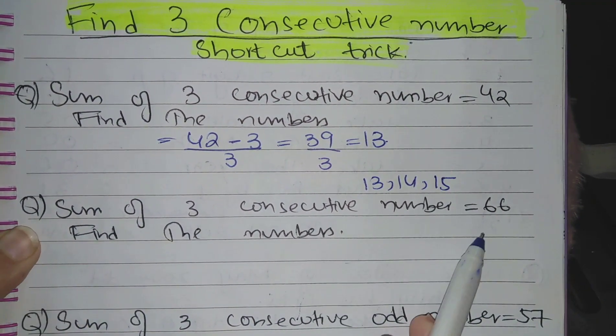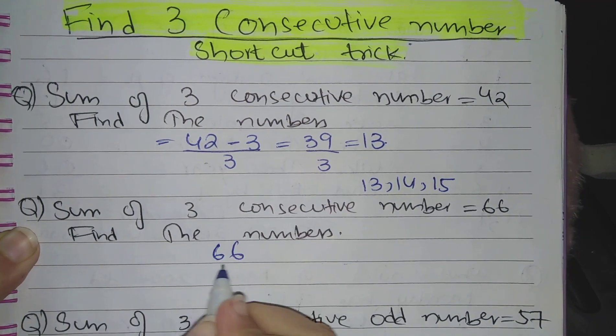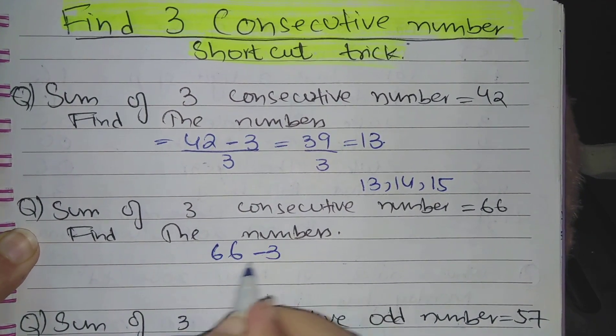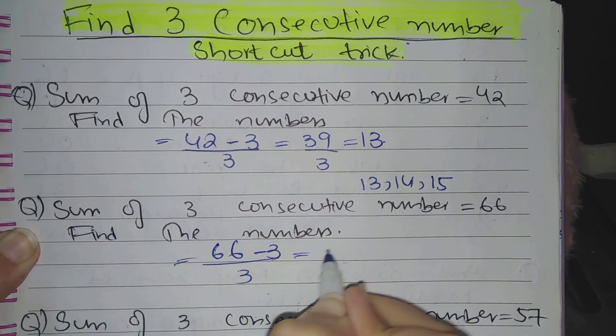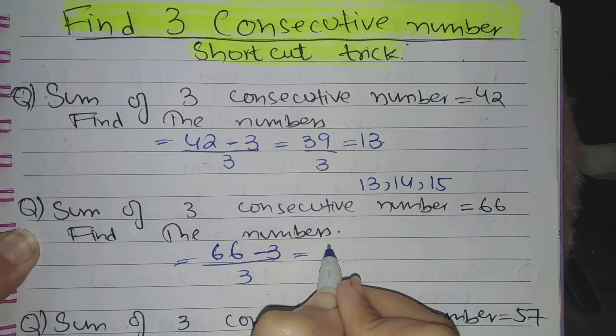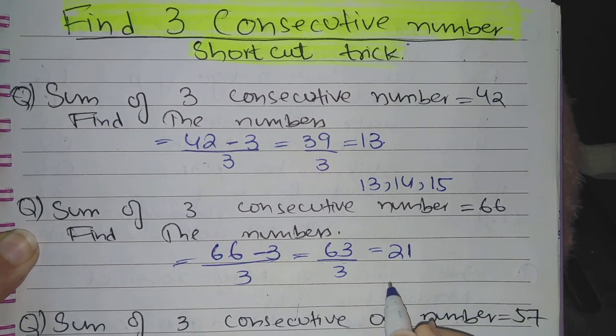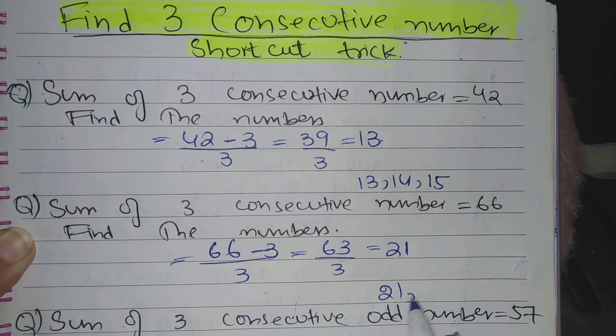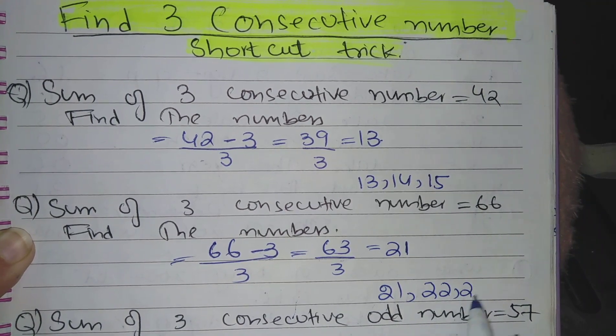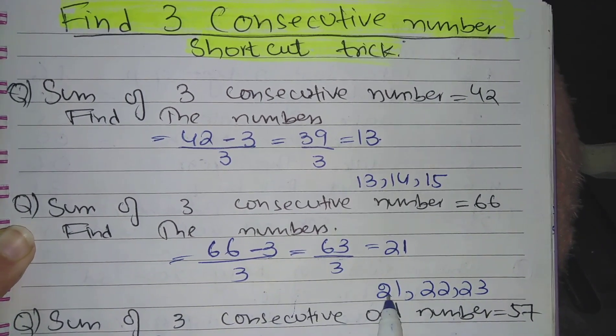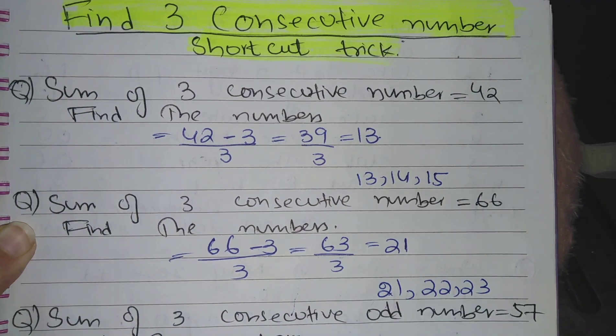Similarly, sum of three consecutive numbers is given as 66 and you have to find the numbers. Just subtract 3 and divide it by 3. 66 minus 3 will be 63 divided by 3, this will be 21. So three consecutive numbers will be 21, 22, and 23. When they are added the result will be 66.